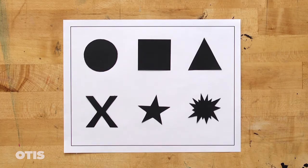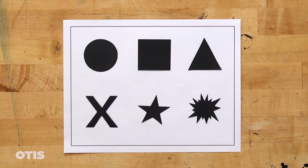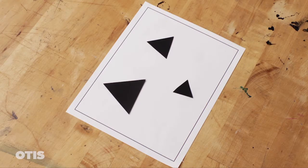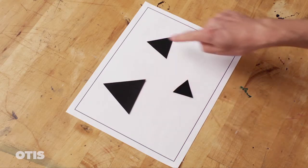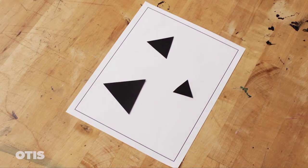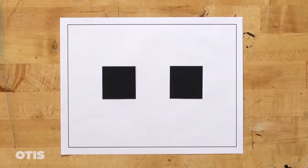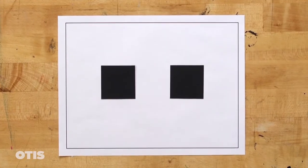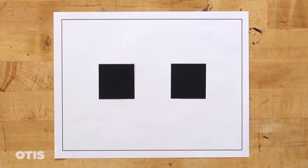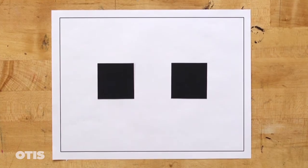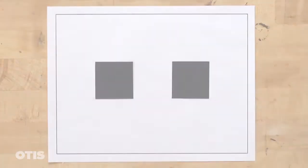Faces and eyes attract our attention extremely well, but we are only using abstract forms for this demonstration so you can understand the fundamentals. Our eyes will typically go to the largest, most prominent object first, and then move to the smaller objects. You can also create balance or move the eyes back and forth between two or more points by giving the objects equal weight.